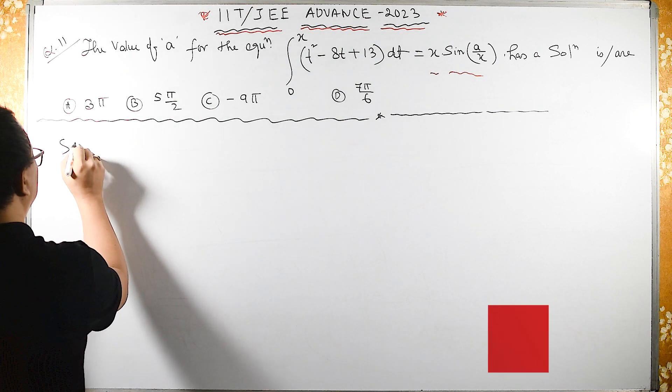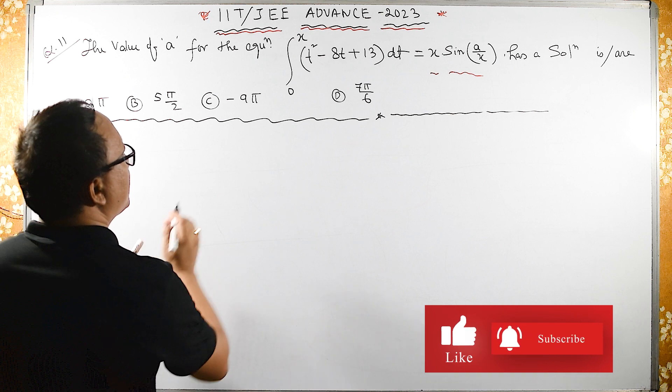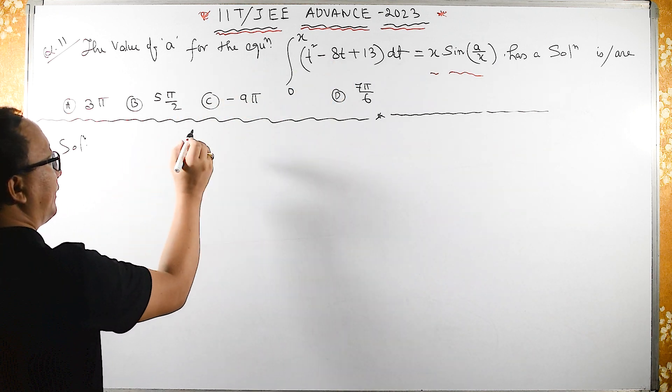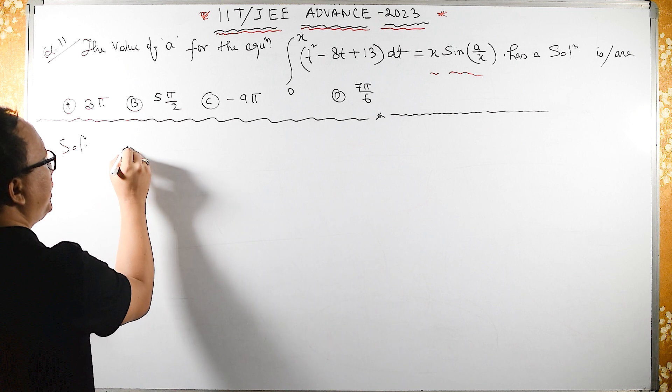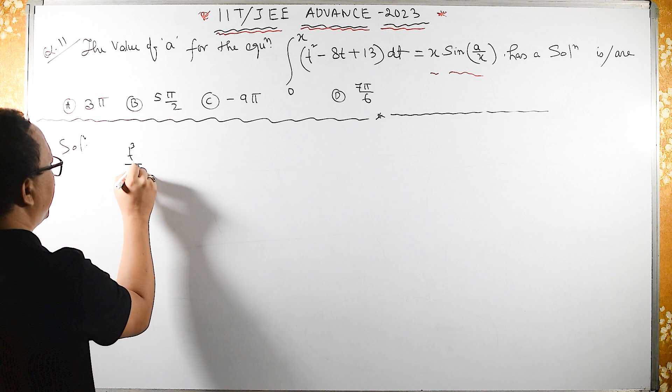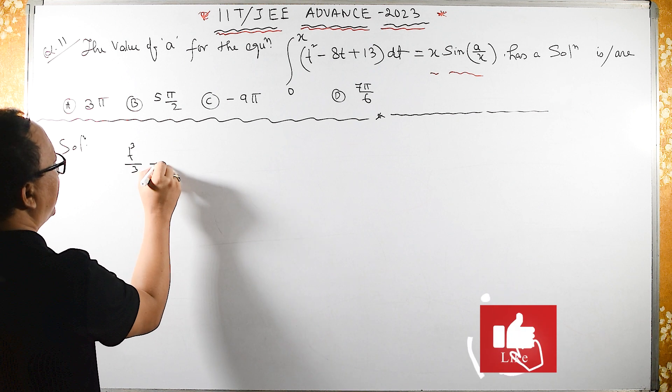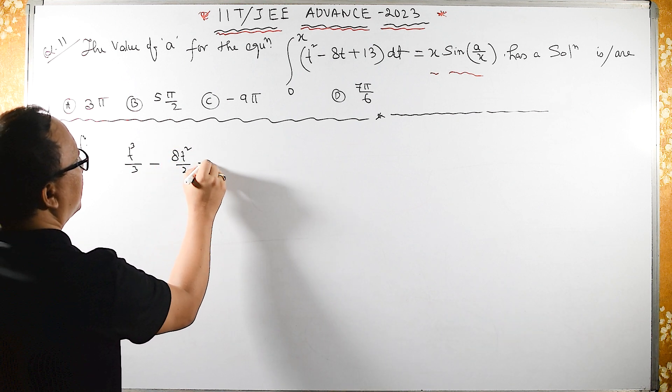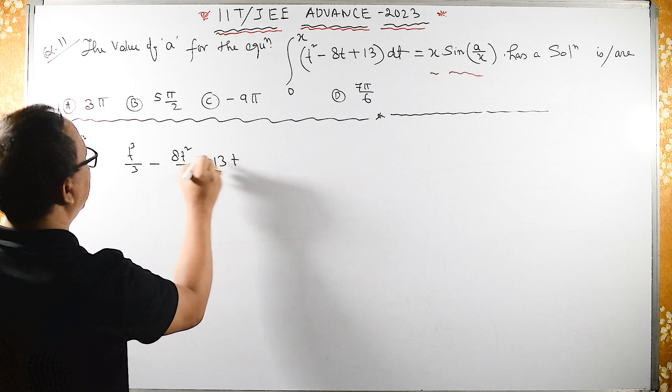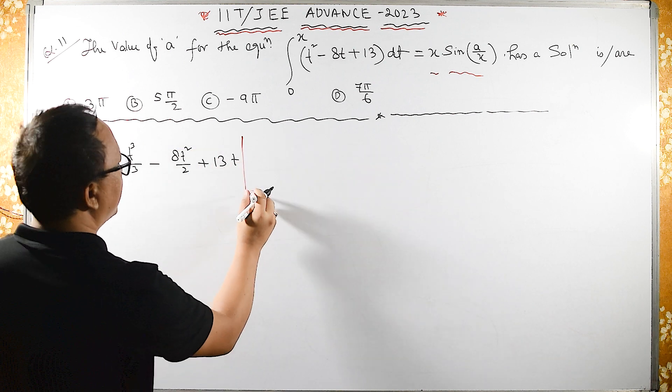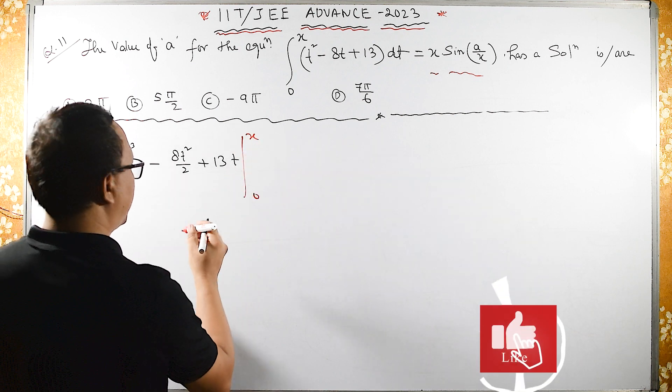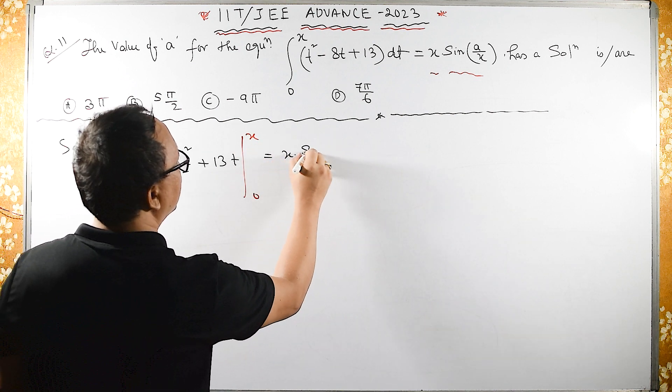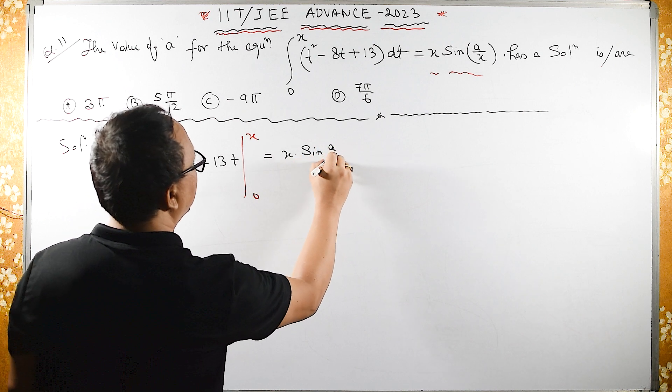Solution: Let us integrate this directly. On the left hand side I will get T³/3 - 8T²/2 + 13T, limit from 0 to X, and on the right hand side what do we have: X·sin(A/X).